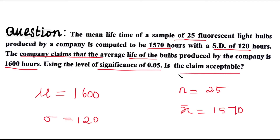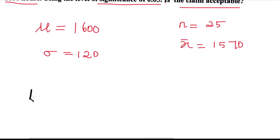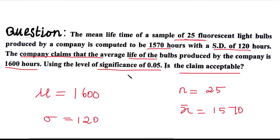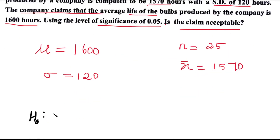The question is: is the claim acceptable? We need to check whether the population mean value of 1600 is acceptable. Now let's set up the null hypothesis. The null hypothesis states there is no significant difference — that is, the average lifetime is 1600, it is not greater or less, it is the same value. So H0: μ = 1600.